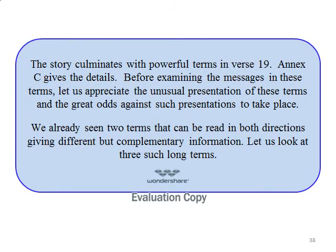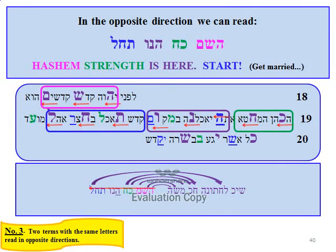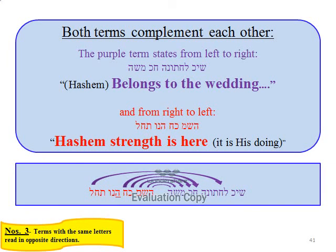Before examining the messages in these terms, let us appreciate the unusual presentation and the great odds against such presentations occurring. We have already seen two terms that can be read in both directions, giving different but complementary information. Let us look at three such long terms. This long term includes the word 'wedding' in the direction we are looking at now. It appears in its lowest skip in the Bible. When we expand the term to its 14 letters, the odds of finding it in the Bible are astronomical. The term states: 'Belonging to the wedding is the taste of Masha.' In the opposite direction we can read: 'Hashem's strength is here. Start, get married.' Note that both terms complement each other.